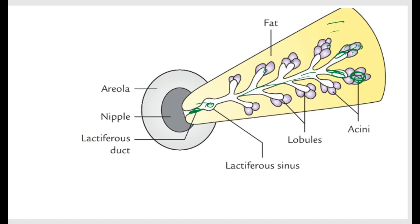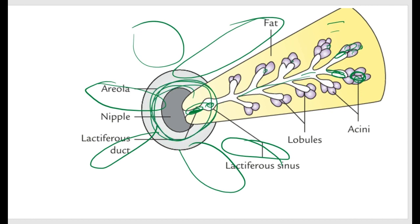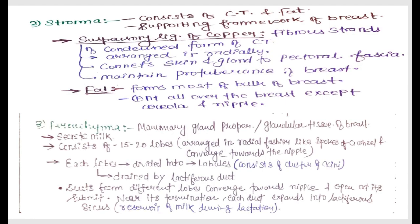In total, 15 to 16 lactiferous ducts open into one nipple. These are the pathways through which the milk will travel after secretion. You can see all these details written in the slide — you can write it down in your notebook or take the script.